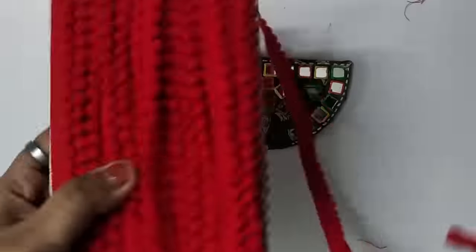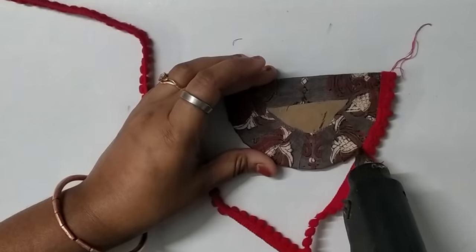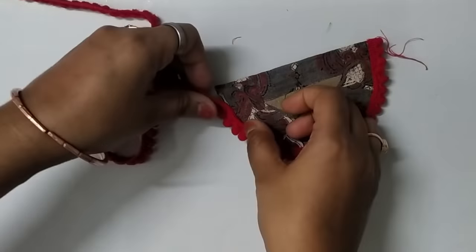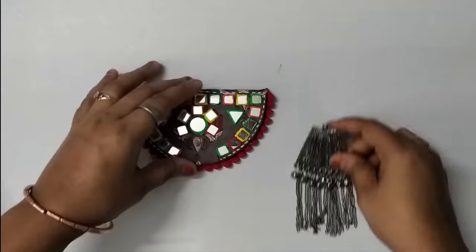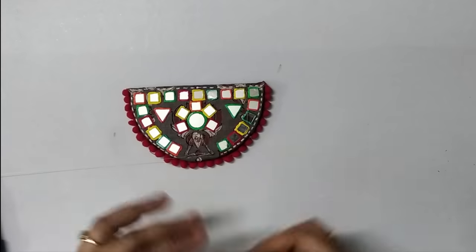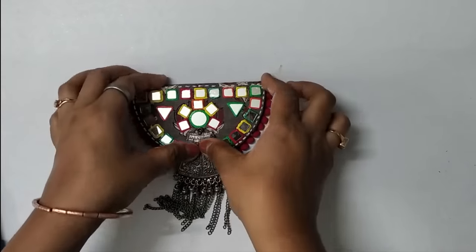Placing this small pom pom lace around this half circle using glue gun. Wow, this looks gorgeous already. Let's see how it looks after fixing this broken piece of jewelry.